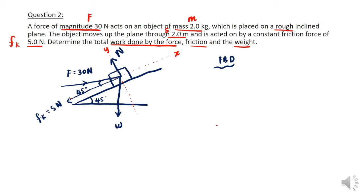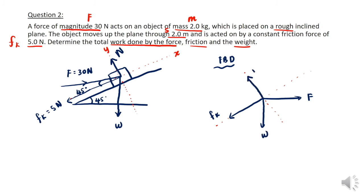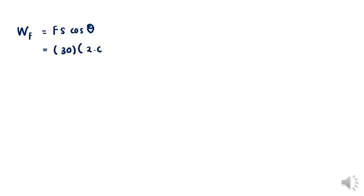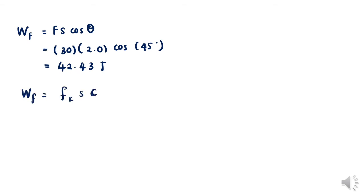First we draw the free body diagram to identify all forces acting on the object. Each force contributes to the work done on the system depending on the angle between that force and the displacement. We have friction, applied force, normal force, and weight — and weight and force need to be resolved. For the work done by the applied force lifting the object through 2 metres: W = Fs cosθ where the angle between F and S is 45°, giving an answer of 42.43 Joules.